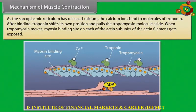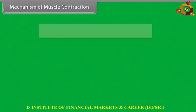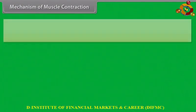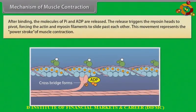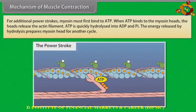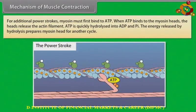When tropomyosin moves, the myosin binding site on each of the actin subunits of the actin filament gets exposed. When a myosin head binds to actin and forms a cross bridge, the molecules of Pi and ADP are released. This release triggers the myosin heads to pivot, forcing the actin and myosin filaments to slide past each other. This movement represents the power stroke of muscle contraction.